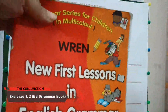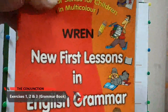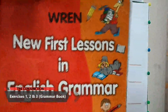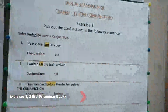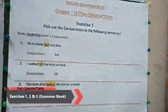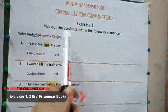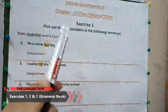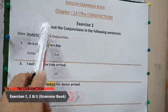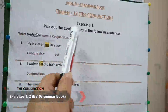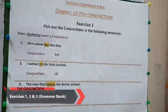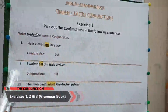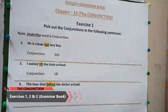Please take out your English grammar book, New First Lessons in English Grammar, and take out page number 31. We will start with Exercise 1. Exercise 1 is about picking out conjunctions in the following sentences. There are different sentences given and we have to pick out the conjunction.